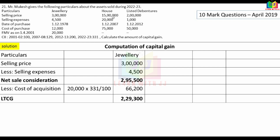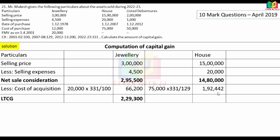Next: house property. Selling price: Rs.15,00,000. Net sale consideration: Rs.14,80,000. Cost of purchase: Rs.75,000, year of purchase: 2007, index: 129. Indexed cost = Rs.75,000 into 331 divided by 129 = Rs.1,92,442. Long-term capital gain from house property: Rs.12,87,558.